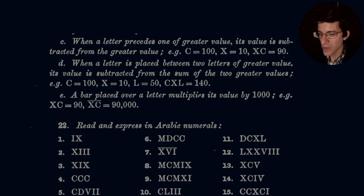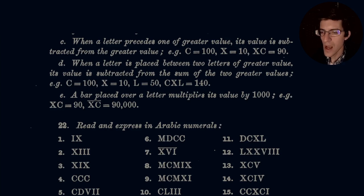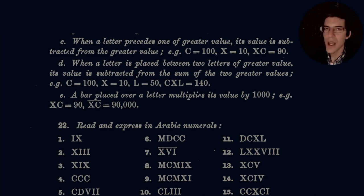A bar placed over a letter multiplies its value by 1,000. For example, XC is equal to 90, and XC with a bar over the top is 90,000. This would essentially be times 10 to the third power.